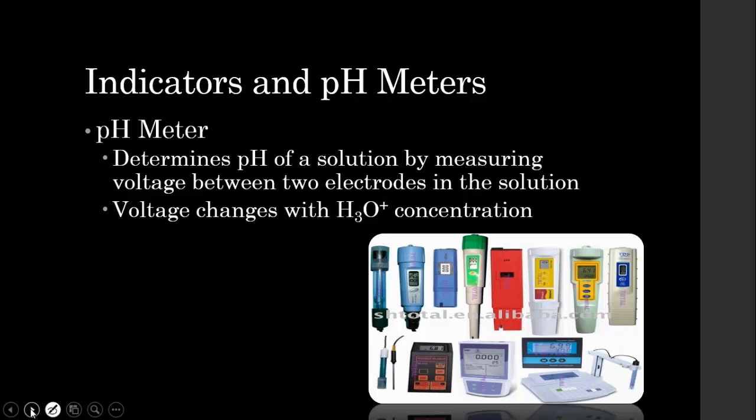So you can get a voltage going in the solution. Our voltage will change with the hydronium ion concentration, thus giving us the pH. And this will be a more precise value since it's a digital printout of what the pH is compared to the paper in which you have to compare two different colors.